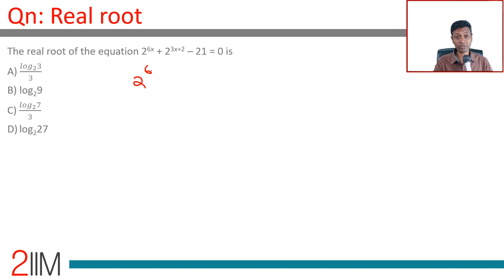The real root of the equation 2^(6x) + 2^(3x+2) - 21 = 0. The idea for all of these questions is to convert this into a quadratic.